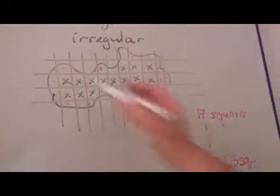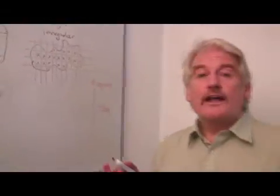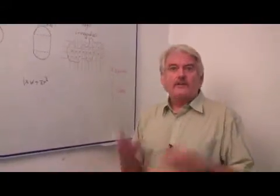If these were centimeter squares, it'd be square centimeters. If they were inch squares, it would be square inches. This is a very accurate way, actually, of calculating the area of an irregular figure.